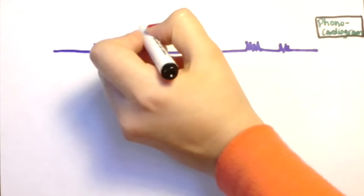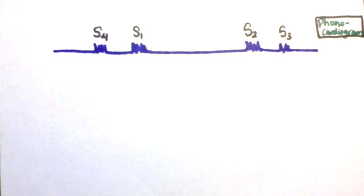The phonocardiogram shows the heart sounds. The first heart sound, S1, is heard during the isovolumetric contraction phase when the mitral valve closes. S2 is heard during the isovolumetric relaxation phase when the aortic valve, or the semilunar valve, closes. S3 and S4 are abnormal, as stated in the previous video, and should not be heard in healthy individuals.